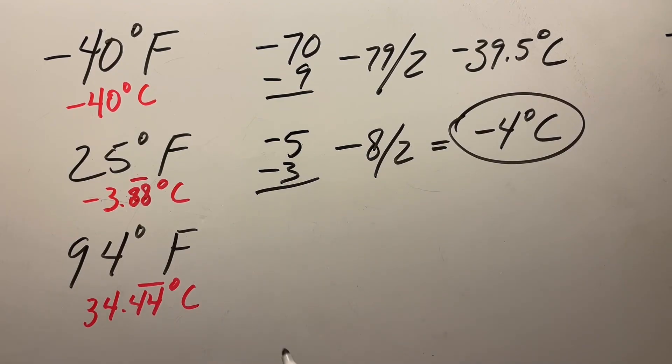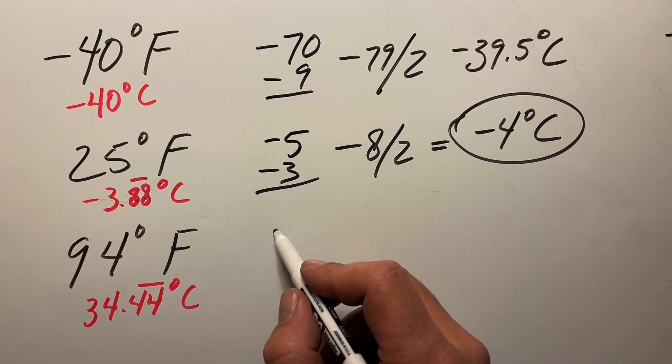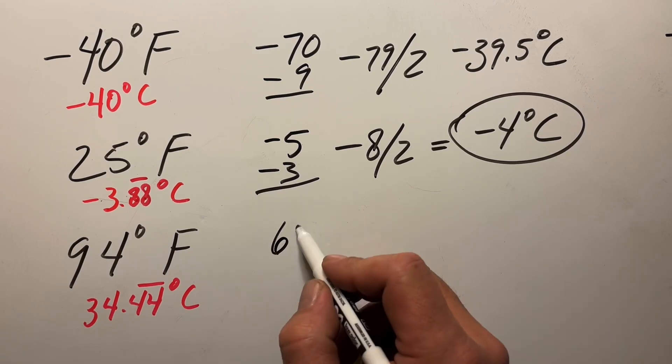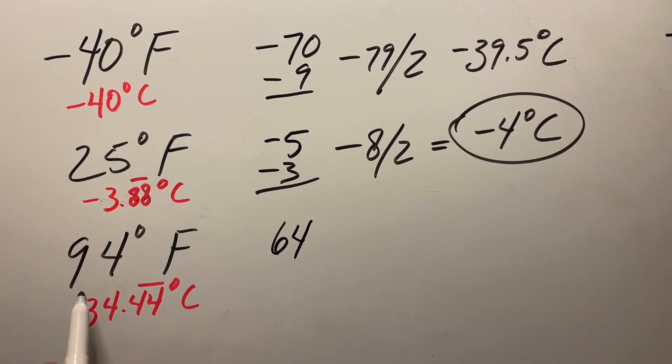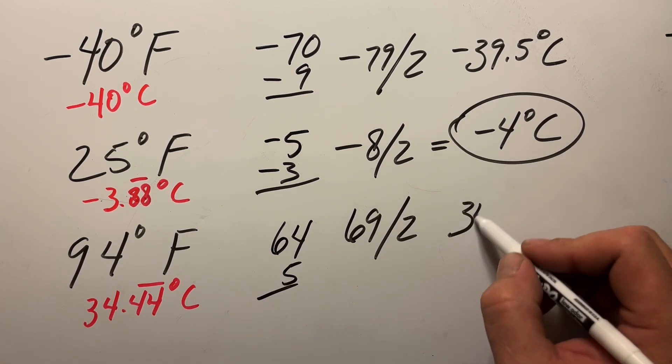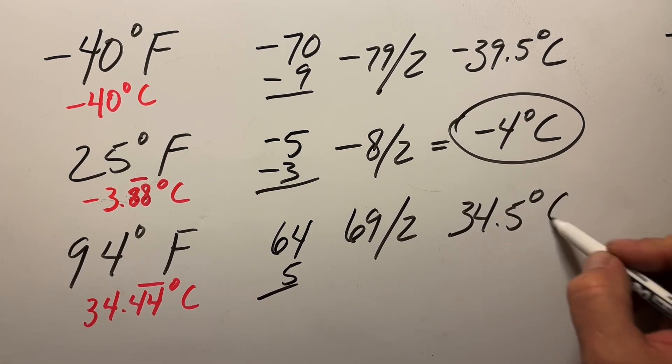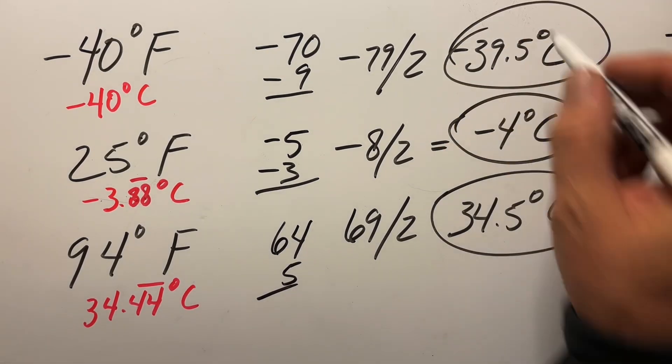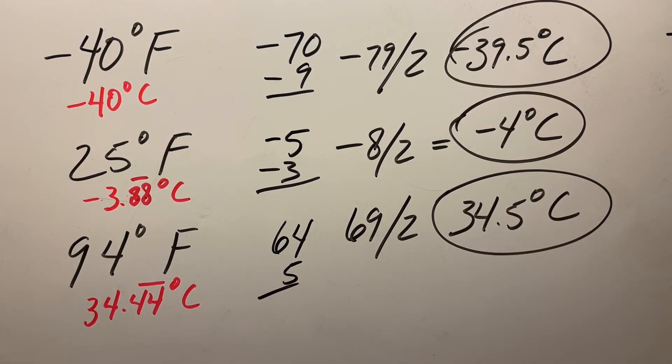Finally, the last one, we start out at 94. We subtract 30 from that. That starts out at 64. The difference between 94 and 50 is 44. We're going to round that up to 5. So this becomes 69 divided by 2 will be 34.5 degrees Celsius.